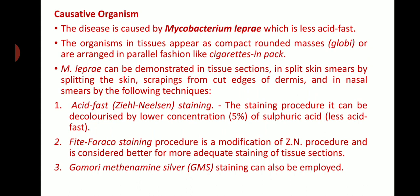The disease is caused by Mycobacterium leprae, which is less acid-fast. In tissue, the organism appears as compact rounded masses called globi, or arranged in a parallel fashion — like cigarettes in a pack — which is a characteristic arrangement of Mycobacterium leprae.